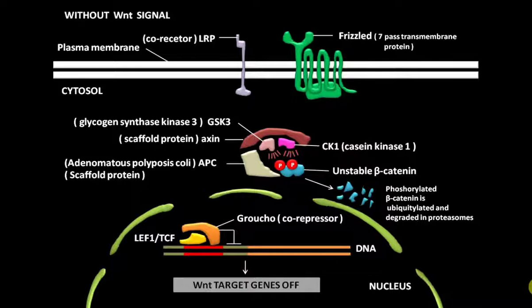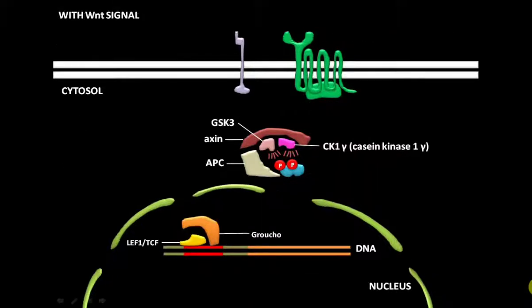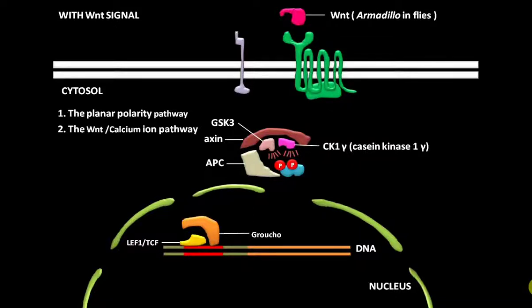At the same time, the inactive scaffold protein Dishevelled remains in the cytoplasm. The secreted protein Wnt, called Armadillo in flies, can activate at least three types of intracellular signaling pathways: the planar polarity pathway, the Wnt-calcium ion pathway, and the Wnt-beta-catenin pathway.